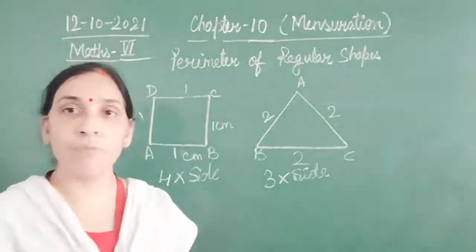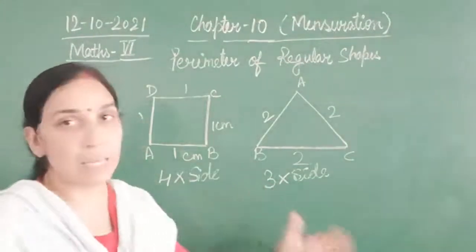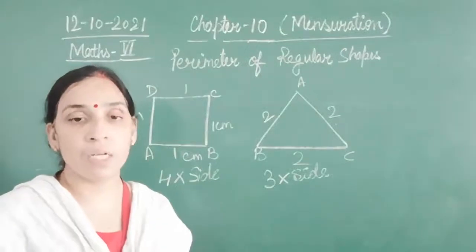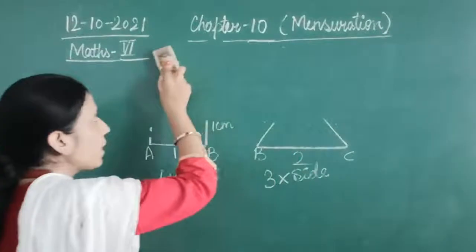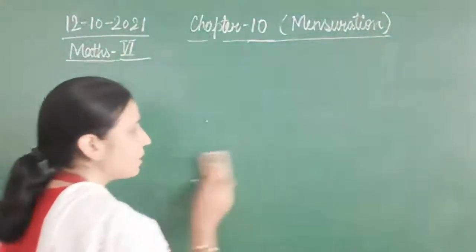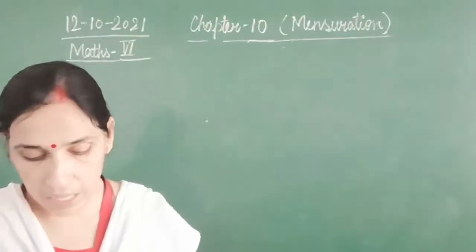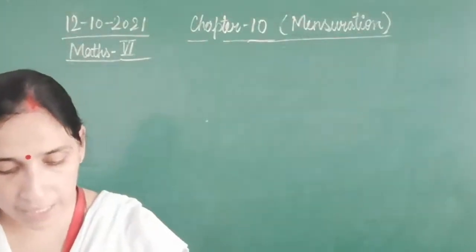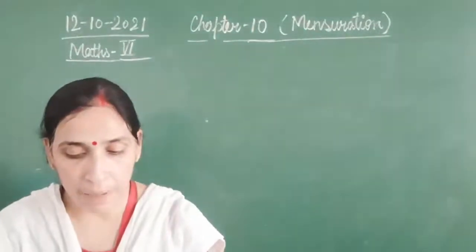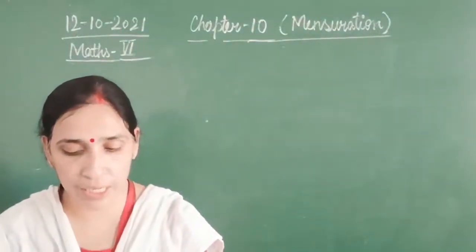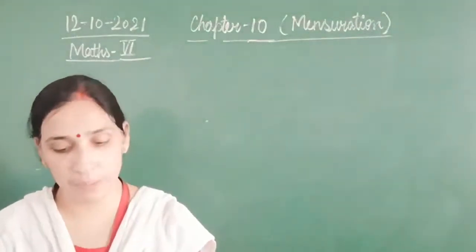Now we are going to do a few examples related to plane figures, and after that we will come to exercise 10.1. So let's see example 6. Till example 5 we have already done in yesterday's class. Example 6: find the distance travelled by Shaina if she takes three rounds of a square park of side 70 metres.